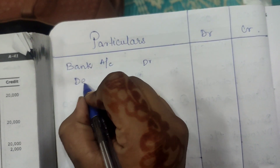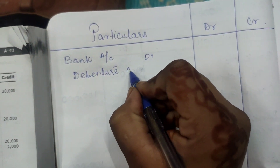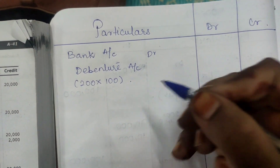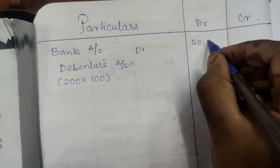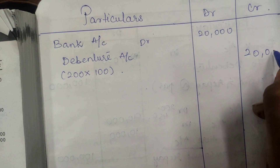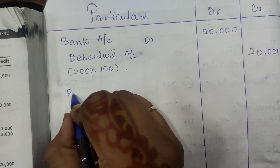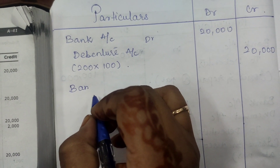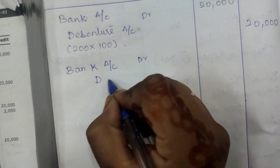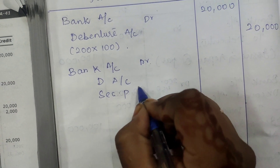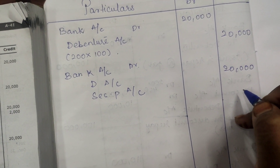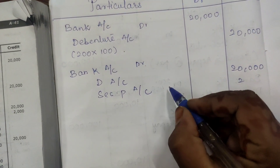For issued at premium of 10%: Bank Account Dr. to Debenture Account 20,000 and to Securities Premium Account 2,000, totalling 22,000. This is because the premium received at the time of issue is credited to Securities Premium Account. The 10% premium on 20,000 is 2,000.